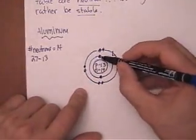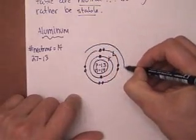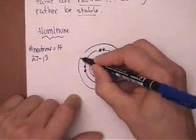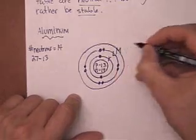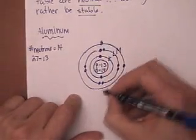So 8 plus my 2 is 10. I still have three to go in my last orbit, which is my M orbit. So M, and I want three: one, two, three. There you go, that's your Bohr model for aluminum.